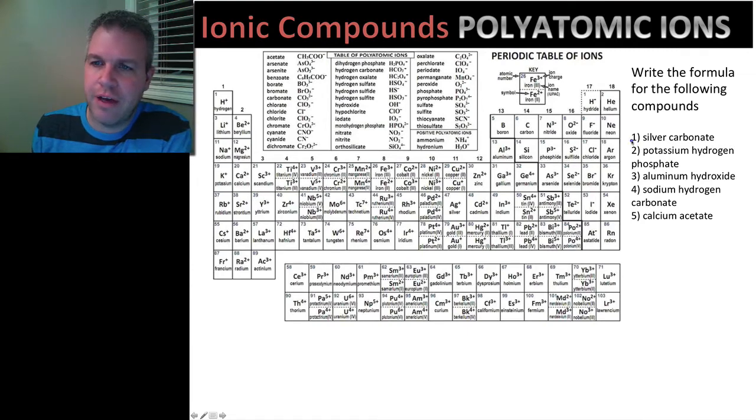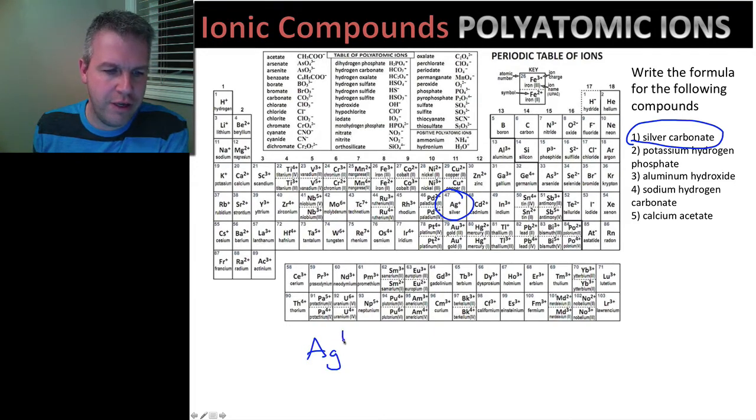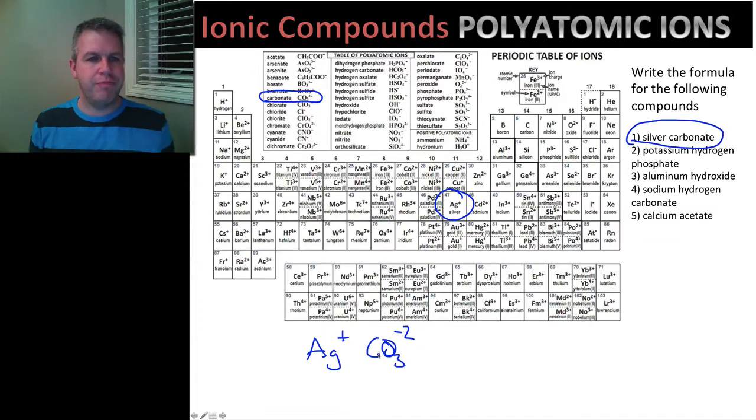So we're going to jump right into this and we're going to take a look at silver carbonate first. Here we have silver in the middle of our periodic table, Ag, and like we've always done in the past we write down the charge value. And carbonate is right here, CO3 2 negative. Now the only thing we have to deal with when we look at polyatomics is that these two together, the CO3 together has a charge of negative 2.